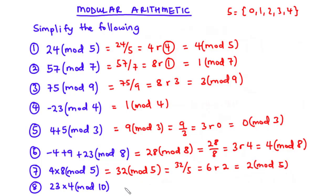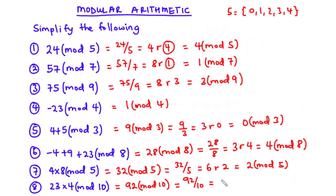Question 8: 23 × 4 modulo 10. We multiply 23 by 4 to get 92, so this becomes 92 modulo 10. Dividing 92 by 10: 10 times 9 is 90, remainder 2 (92 minus 90). Therefore 23 × 4 mod 10 equals 2.